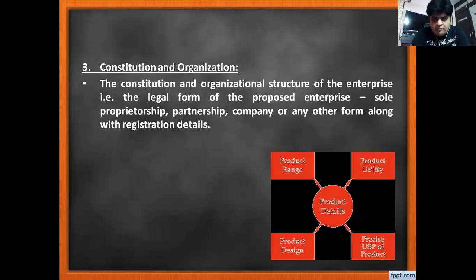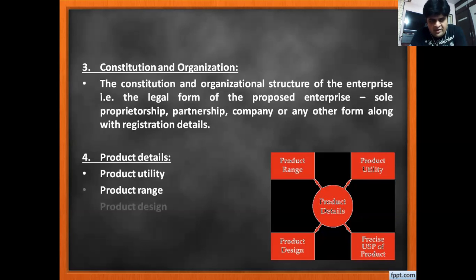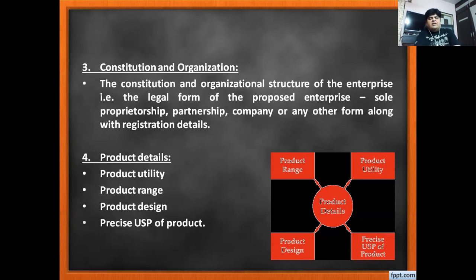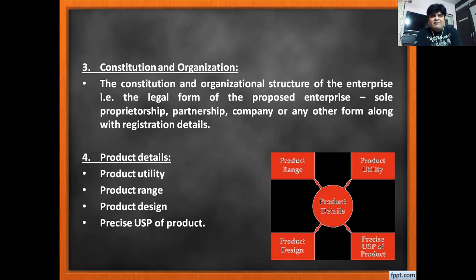The fourth part is to provide product details — what is your product utility, product range, product design, and the precise USP of the product. Product utility means what benefit it will serve to the customer. Product range refers to which ranges of products you are offering.